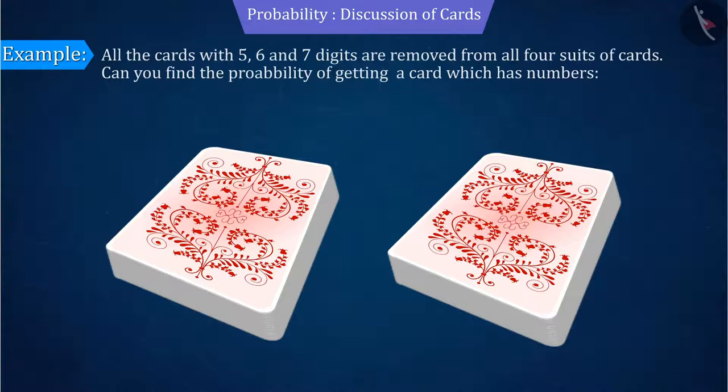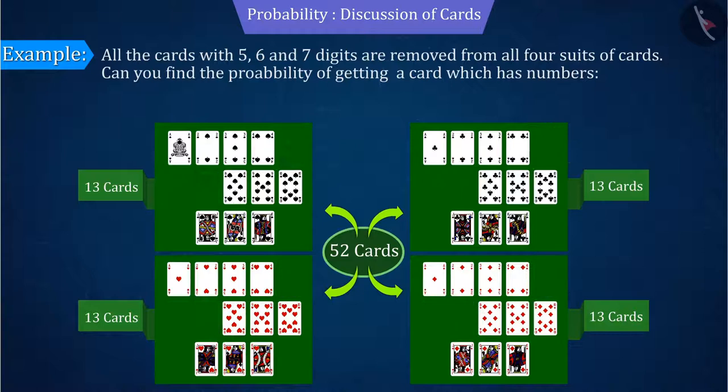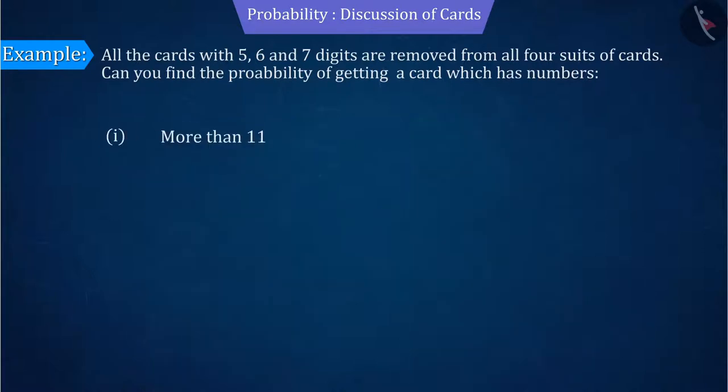All the cards with 5, 6 and 7 digits are removed from all four suits of cards. So can you find the probability of getting cards which have numbers more than 11, number less than 11, and number 11?